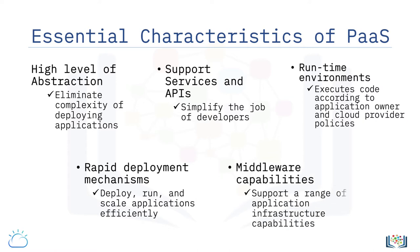PaaS offerings support a range of application infrastructure, or middleware, capabilities such as application servers, database management systems, business analytics servers, mobile backend services, integration services, business process management systems, rules engines, and complex event processing systems. Such application infrastructure assists developers by reducing the amount of code that must be written while expanding the application's functional capabilities.